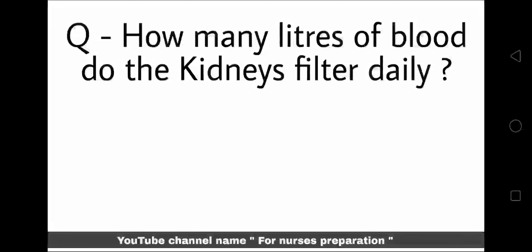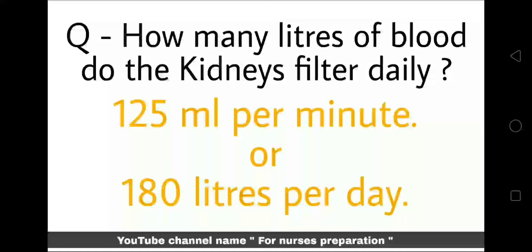How many liters of blood do the kidneys filter daily? Your kidneys filter 125 ml per minute, or 180 liters per day of blood. This rate is also known as GFR — Glomerular Filtration Rate.